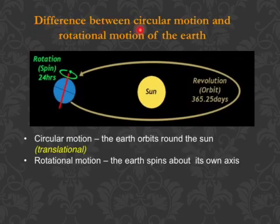Difference between circular motion and rotational motion. The Earth, as it goes around the sun, has two types of motion. First, circular motion as it goes around the sun. Second, it has rotational motion, spinning about its own axis.